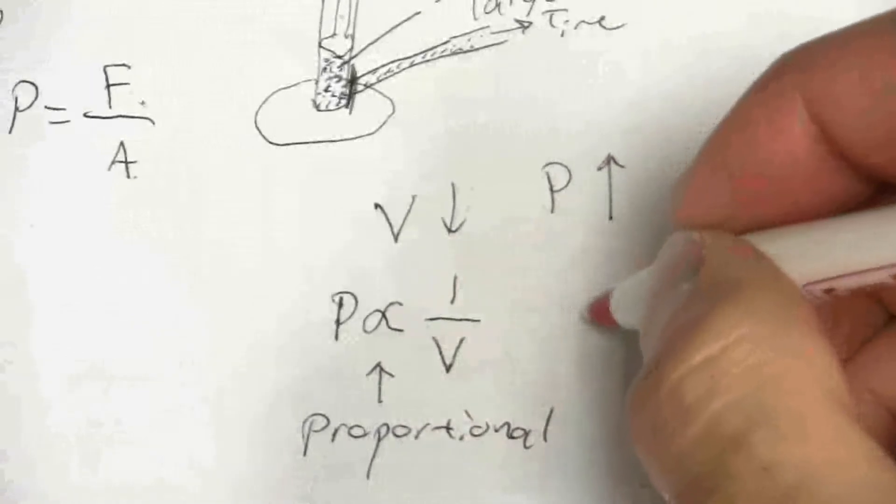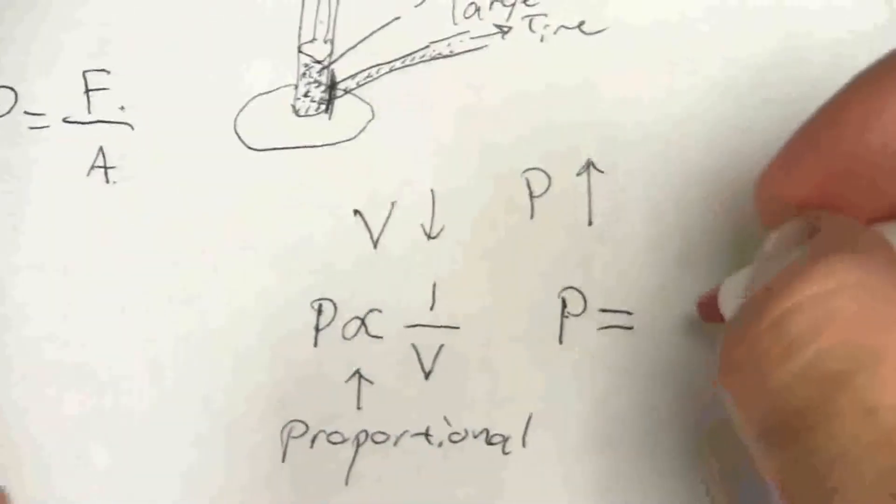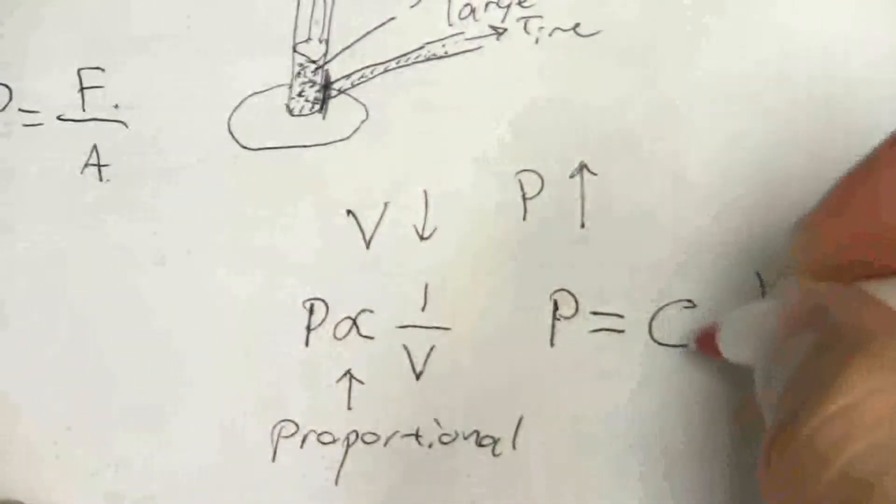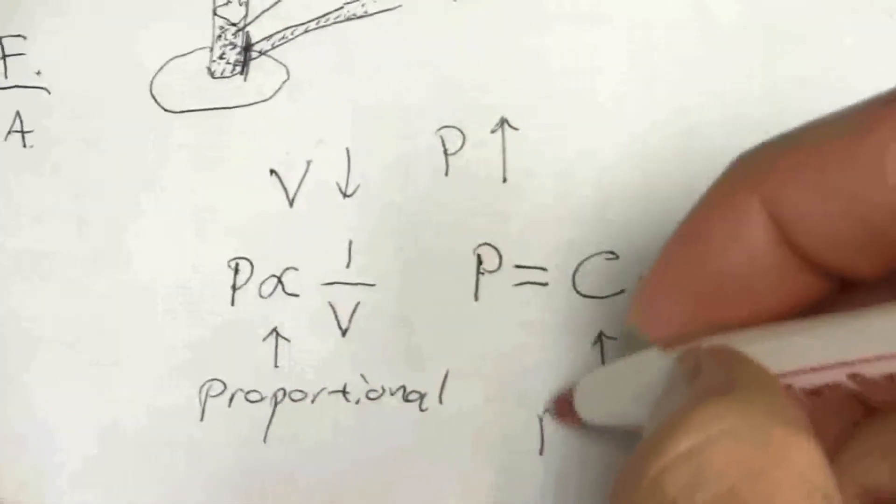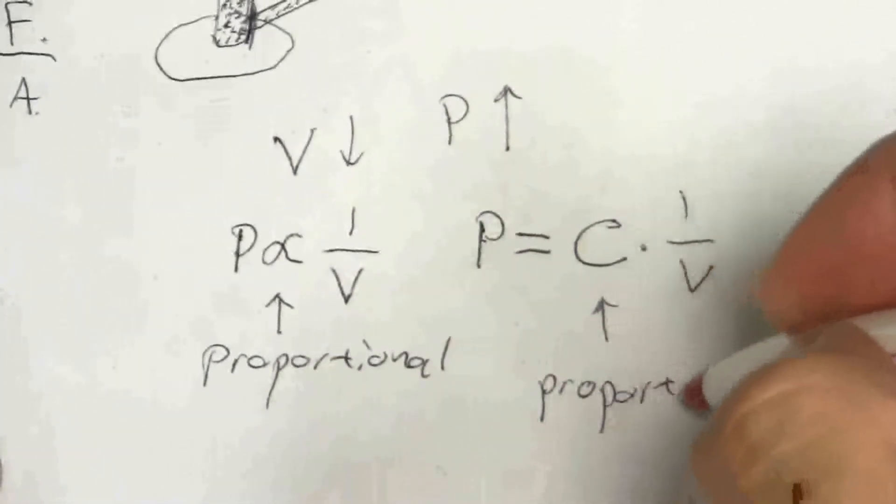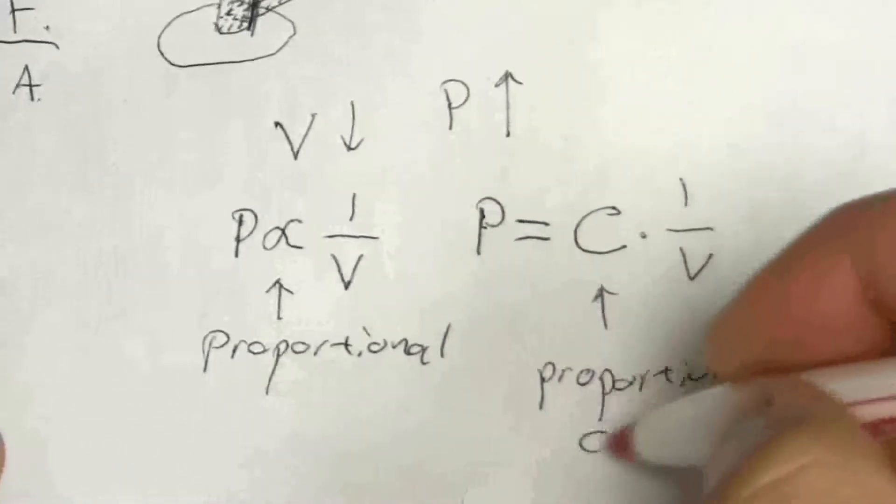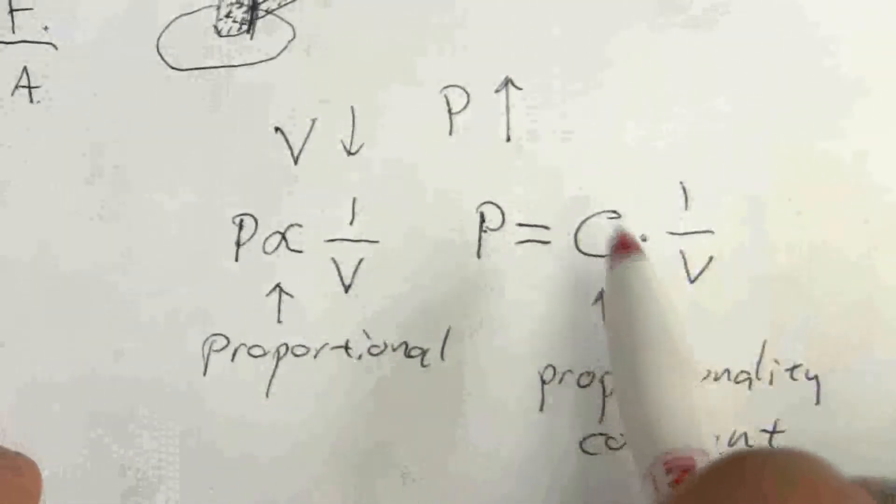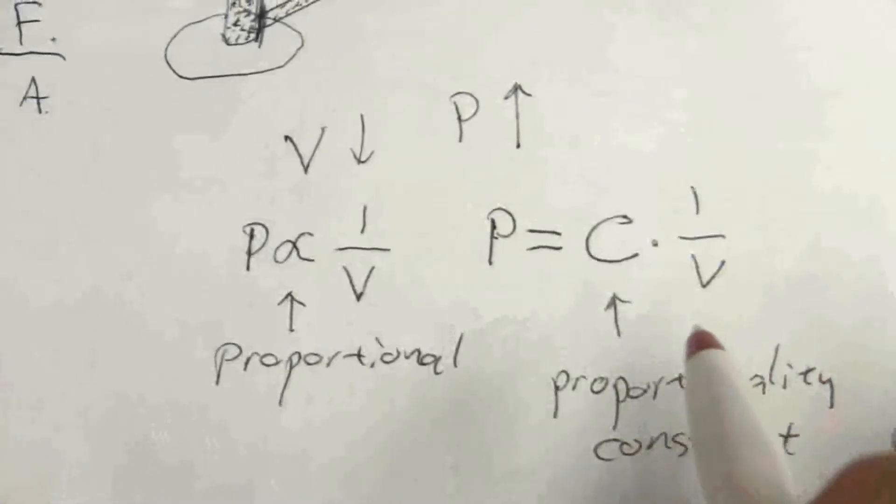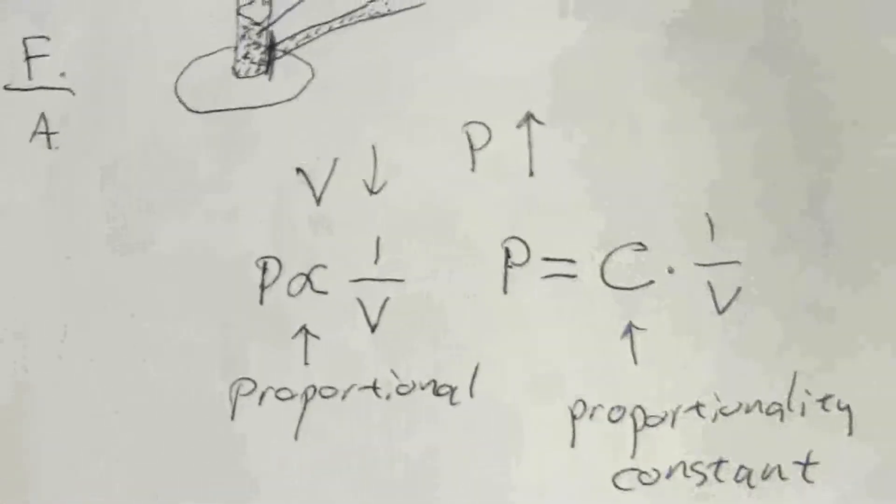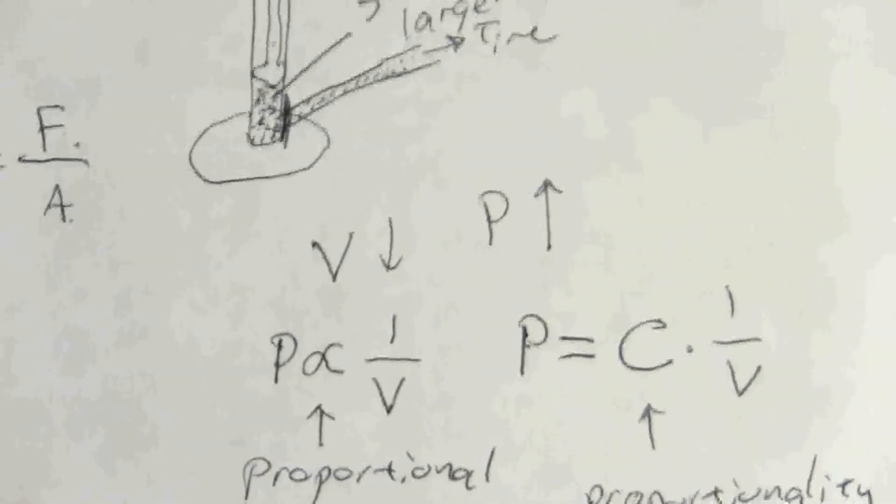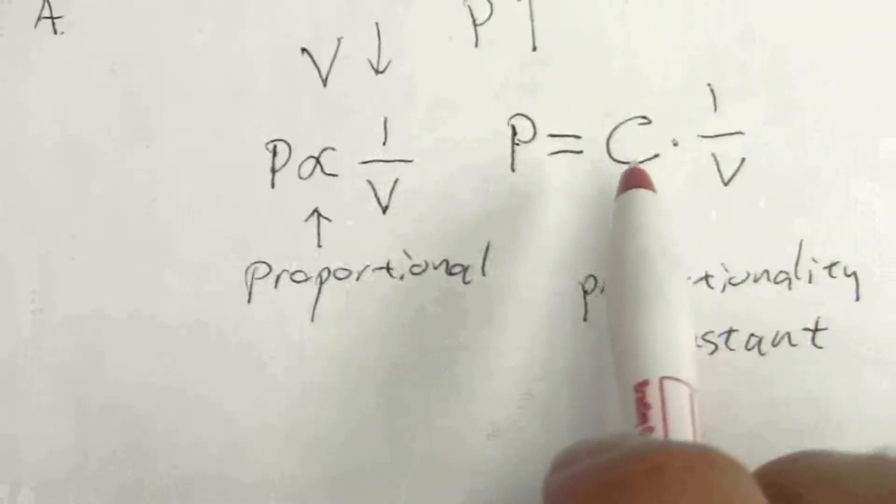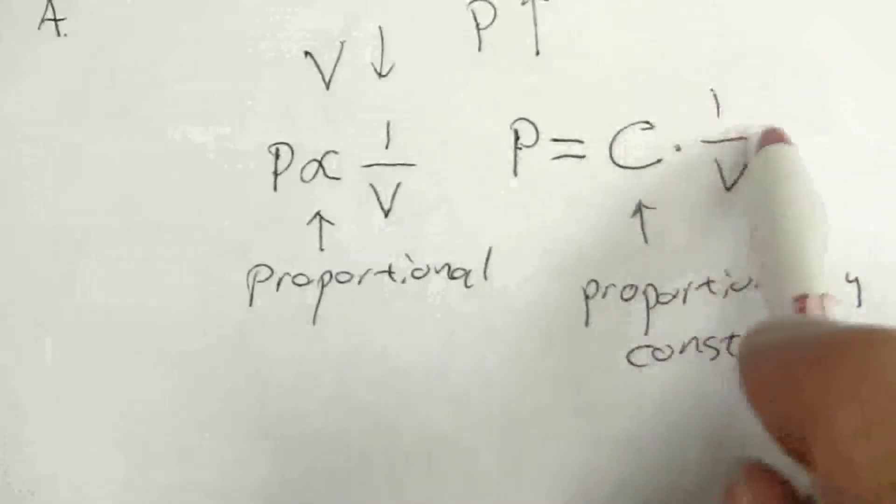So pressure is proportional to one over V, and we can put this in the form of a normal equation by saying the pressure equals some constant times one over V. This is what we call the proportionality constant. And the handy thing about this is we can solve for that constant, and then we have an expression of a law. Something that is the same in repeated measurements.